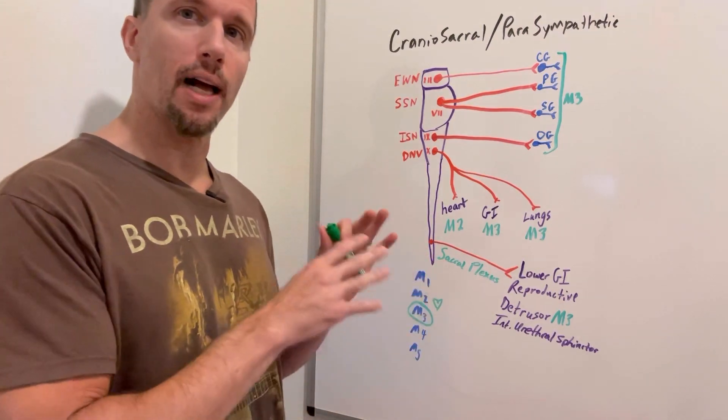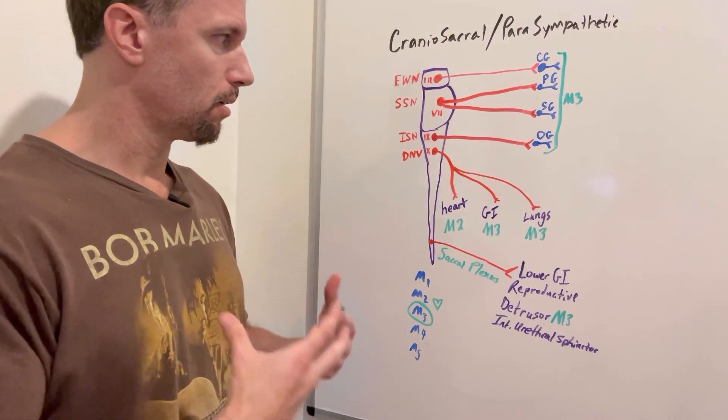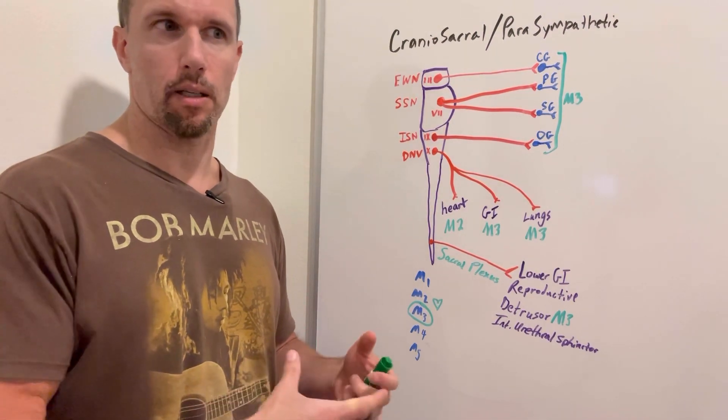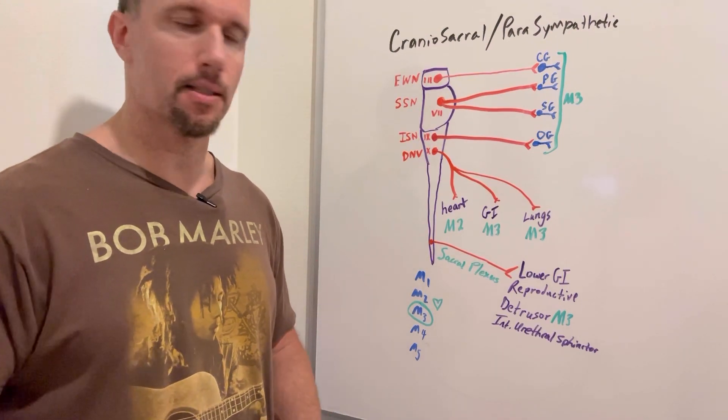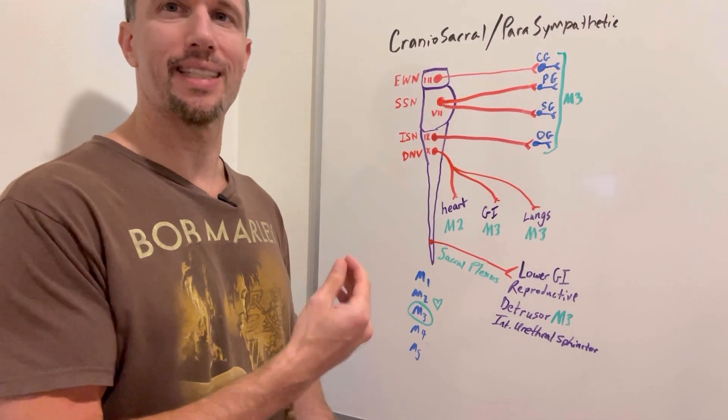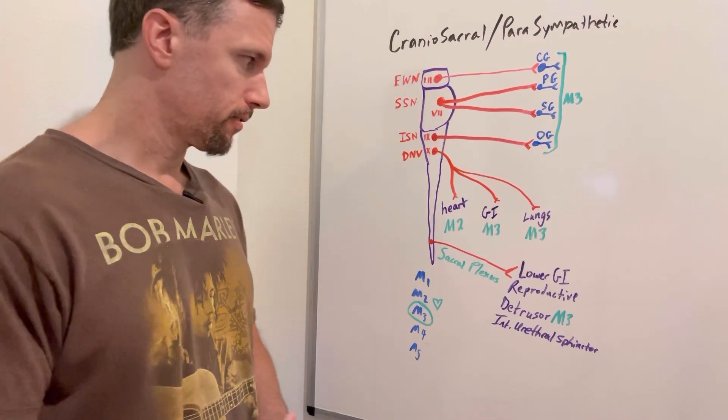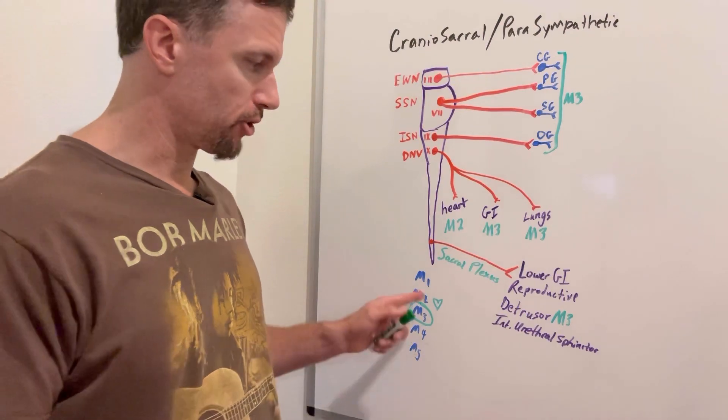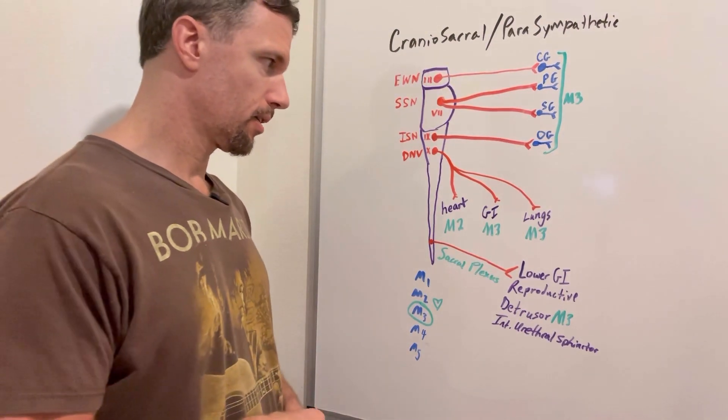One organ is the heart. It's M2. M2 is G-inhibitory, so that's going to go to the heart and slow down the heart rate and decrease the contractility of the heart. It has a negative chronotropic effect on the heart because it slows down the AV node, which is our pacemaker.